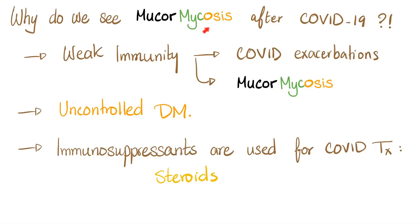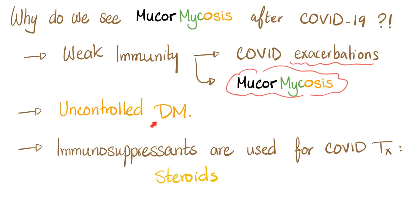Why do we see mucormycosis cases after COVID? I don't have all the answers, but here's my opinion. If you have weak immunity, you are more vulnerable to COVID exacerbation and also to mucormycosis. Uncontrolled diabetes or diabetic ketoacidosis or hyperosmolar non-ketotic hyperglycemic syndrome can increase your risk. Also, if you're taking immunosuppressants - and in severe COVID, doctors may give steroids, which can help with COVID but weaken immunity. There are no solutions in life, there are only trade-offs.